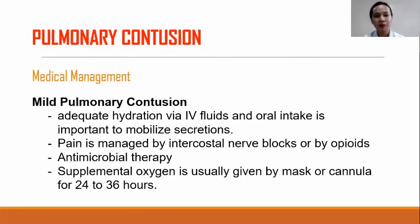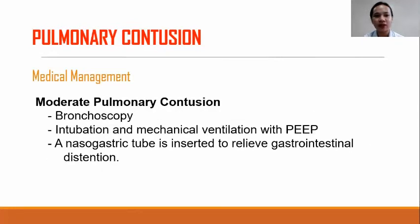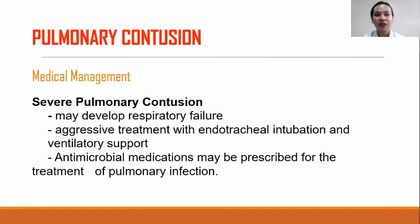Medical management for mild pulmonary contusion: adequate hydration via IV fluids and oral intake is important to mobilize secretions. Pain is managed by intercostal nerve blocks or opioids. Antimicrobial therapy and supplemental oxygen are usually given by mask or cannula for 24 to 36 hours. For moderate pulmonary contusion: bronchoscopy, intubation, and mechanical ventilation with PEEP. A nasogastric tube is inserted to relieve gastrointestinal distension. Severe pulmonary contusion may develop into respiratory failure, requiring aggressive treatment with endotracheal intubation and ventilatory support. Antimicrobial medication may be prescribed for the treatment of pulmonary infection.